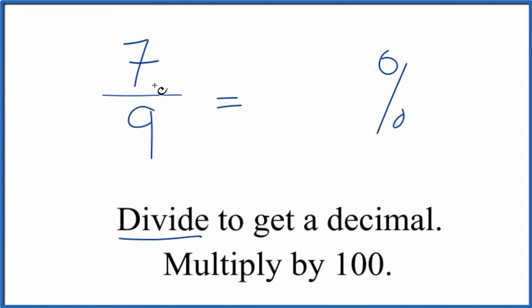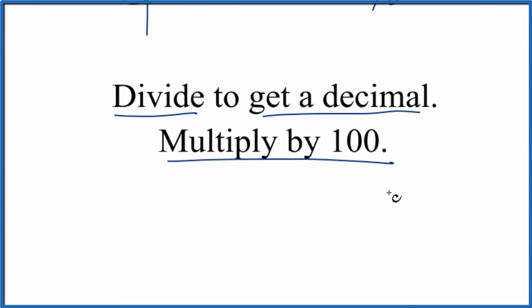The way we do that is we divide 7 by 9. That gives us a decimal. Then we take that decimal and multiply by 100, and we have our percentage.